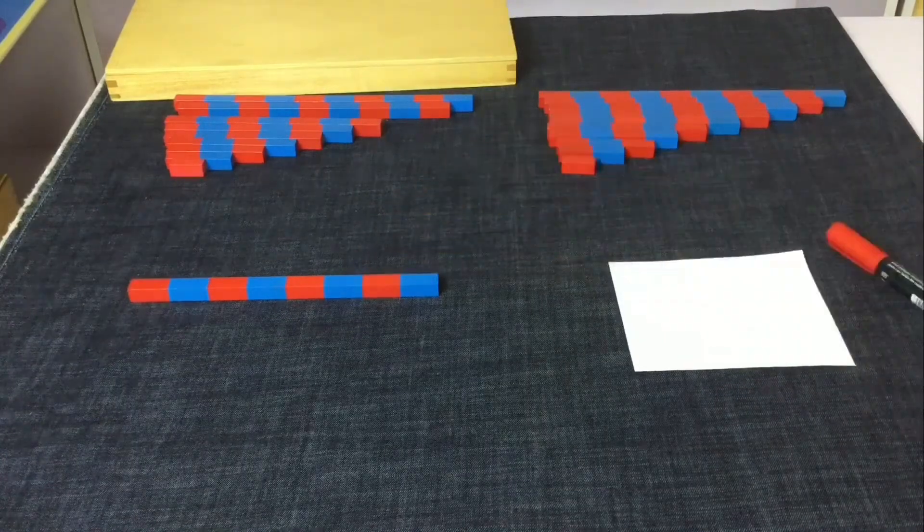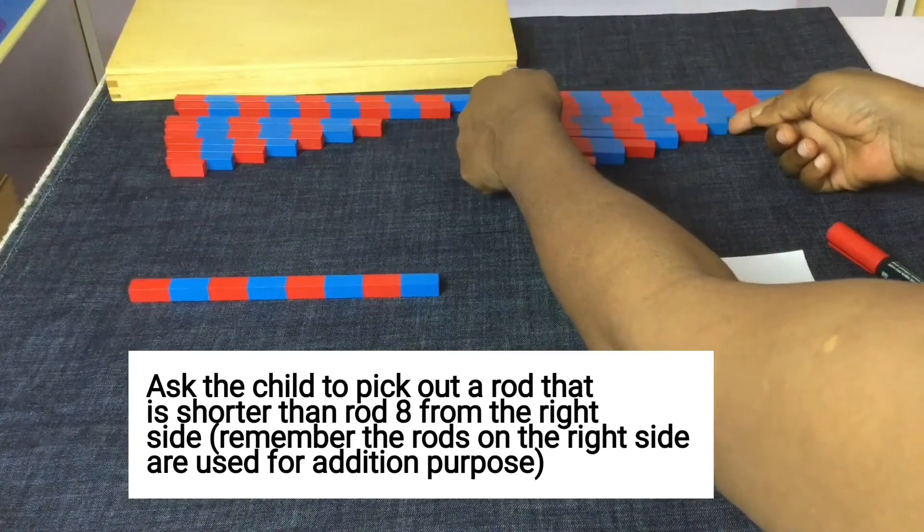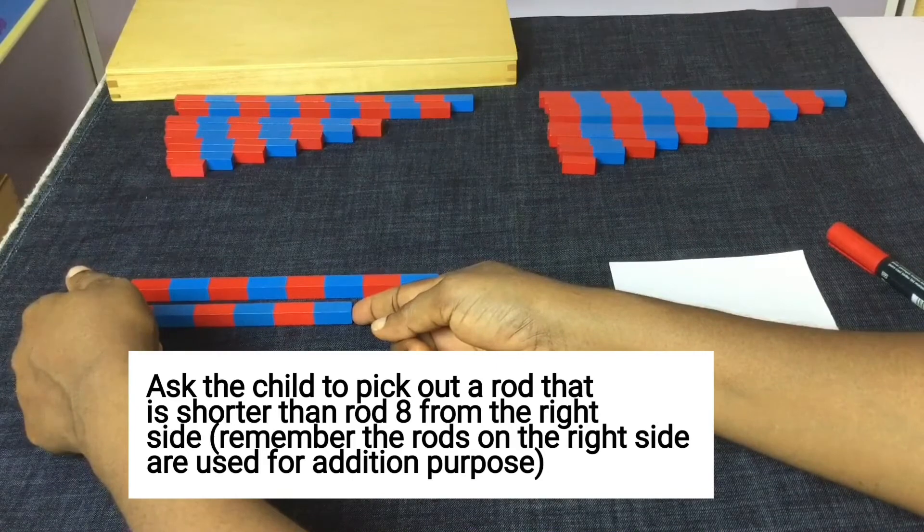Count. Ask the child to pick out a rod that is shorter than rod 8 from the right side. Remember, the rods on the right side are used for addition purpose.